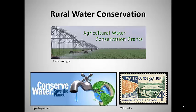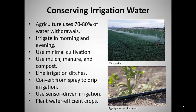Rural areas also offer significant opportunities for water conservation. The single largest use of water worldwide is for irrigation of crops. Actions such as irrigating early or late in the day, using minimal cultivation, and using mulch, manure, and compost to improve water holding capacity of the soil can help to reduce water consumption. So can improvements such as lining ditches to reduce seepage, converting from spray to drip irrigation, using soil moisture sensors to control irrigation, and switching to more water efficient crops.